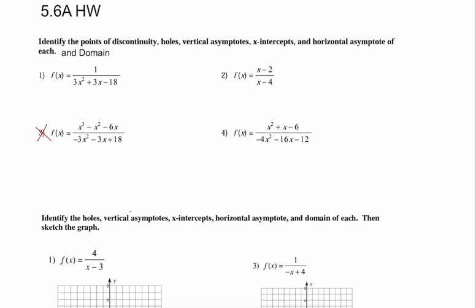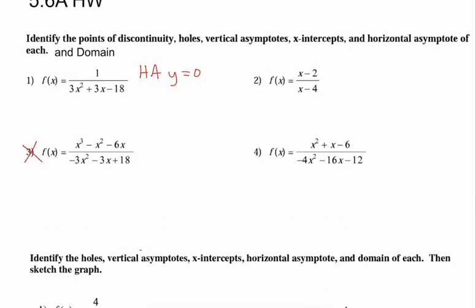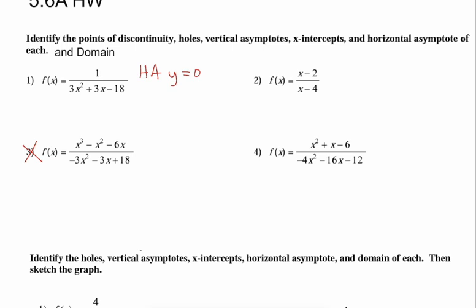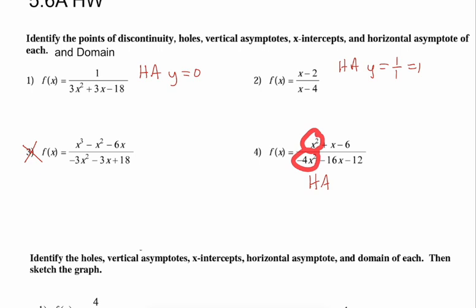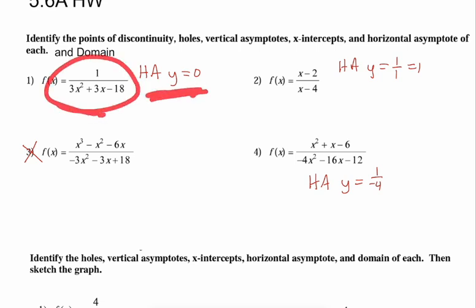Let's discuss horizontal asymptote rules more. For examples 2 and 4, the degree on top and bottom match. When degrees match, the horizontal asymptote is the ratio of the leading coefficients. For example 2, that's 1/1 = 1, so y = 1. For example 4, it's 1/(-4), so y = -1/4. Main rules: if the bottom degree is higher, y = 0; if degrees match, use the ratio of leading coefficients.